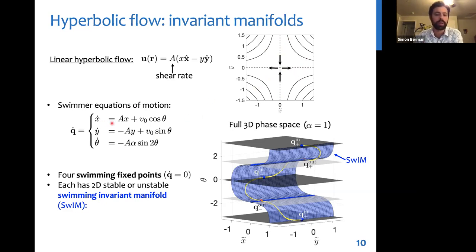Now, if we put a swimmer in this flow, these are the equations of motion we get. And so the idea is to find transport barriers to swimmers by identifying the fixed points and invariant manifolds of the swimmer equations of motion. And so when we do this, we find that there are four fixed points in this flow. We'll call them swimming fixed points to distinguish them from the passive fixed points for passive particles. The fixed points are illustrated in this three-dimensional phase space figure here.